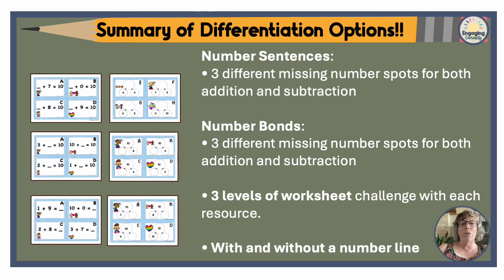So just a quick summary of differentiation options: you've got your number sentences, which have three different missing number spots for both addition and subtraction. You've got your number bonds, which also have three different missing number spots for both addition and subtraction. Those are six different resources total. Within each resource, you've got three levels of worksheet challenge, and each level of worksheet has the option of with or without a number line. There's a lot of variety here for you.